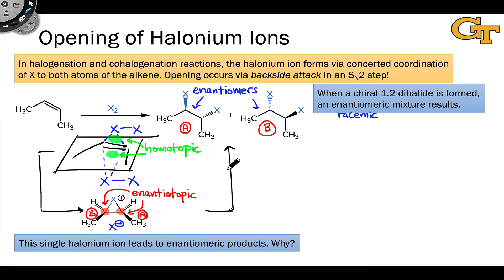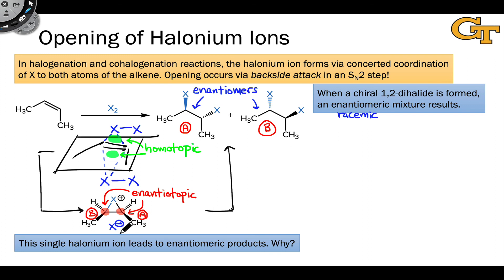And because this halonium ion is achiral and X-minus is achiral, we're generating chiral products from achiral starting materials. Well, this is why we should expect a racemic mixture — a 50-50 mixture of the two enantiomers.